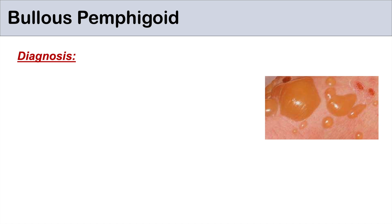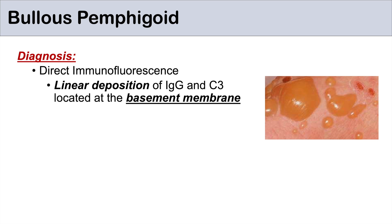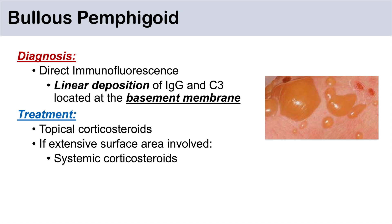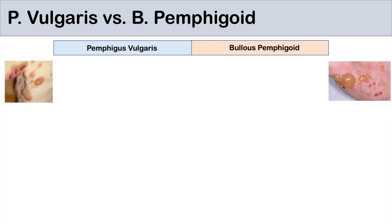The diagnosis of bullous pemphigoid is, again, by direct immunofluorescence. But this time, under the microscope we're going to see linear deposition of IgG and C3 located at the basement membrane — so instead of the outer layer of the bullae lighting up as in pemphigus vulgaris, you're going to see the basement membrane light up. Treatment of bullous pemphigoid is by topical corticosteroids, but if it's extensive disease, we use systemic corticosteroids.